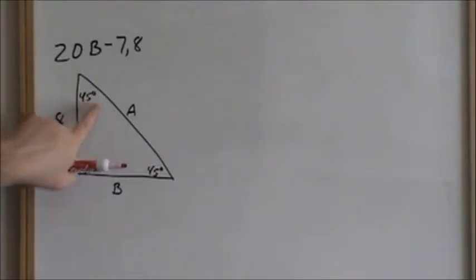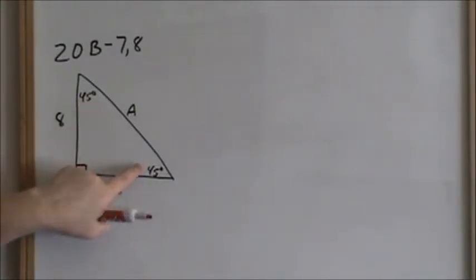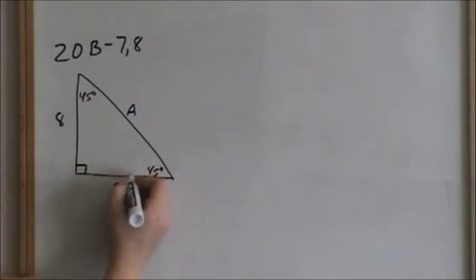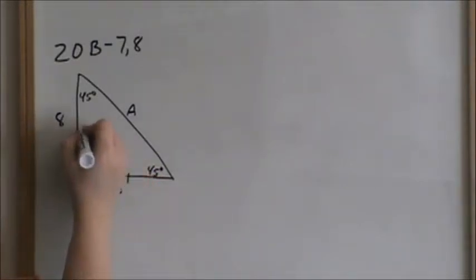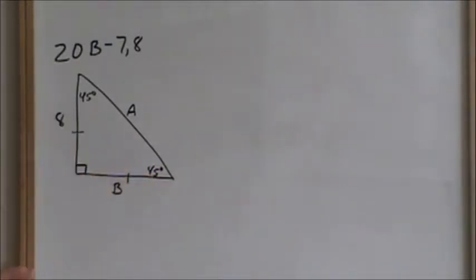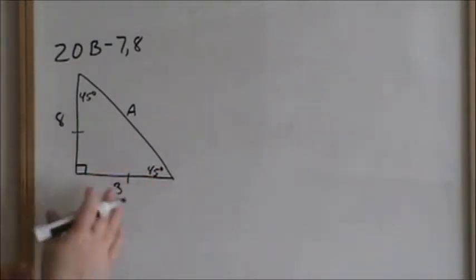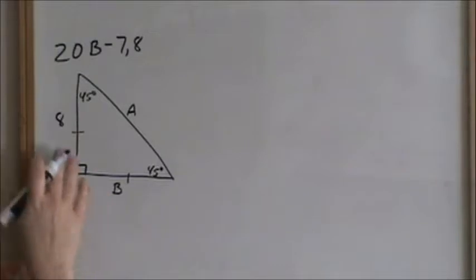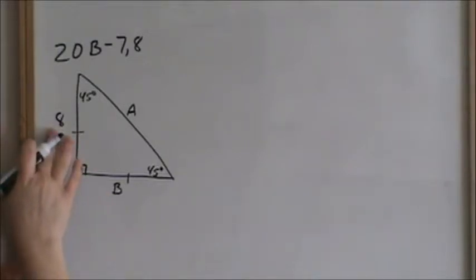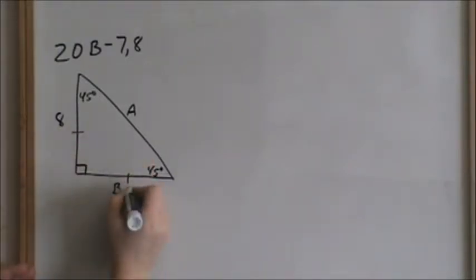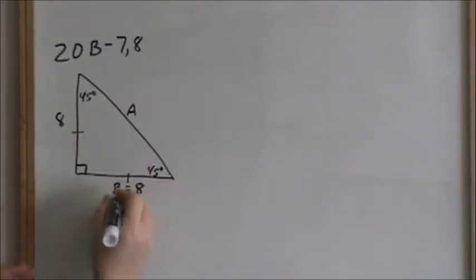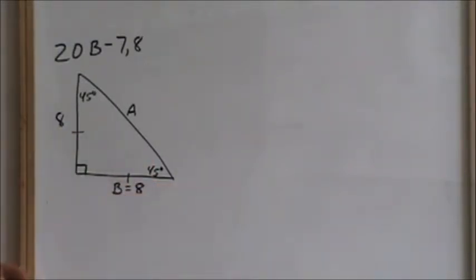If this is 45 and 45 and the angles are the same, then I know that each leg is also congruent. It's an isosceles triangle, so if this side is 8, then I automatically know that B is 8. So that's one of your answers.